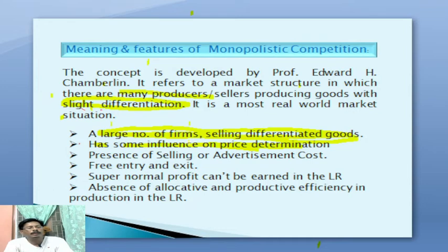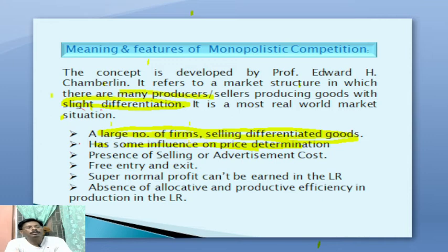As a result, another feature is that supernormal profit cannot be earned in the long run. When the monopolistic competitive industry is earning supernormal profit, new rival firms will enter the market until the profit is squeezed out. As a result, in the long run, revenue becomes equal to cost, price becomes equal to cost, zero economic profit will be earned — that is, no economic profit will be earned in the long run.